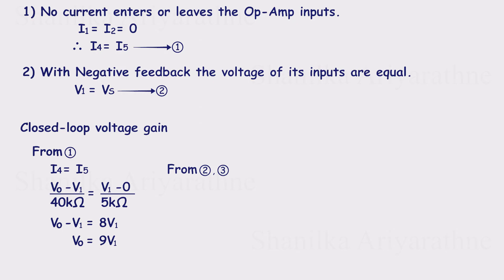And from the second relationship, we know V1 equals VS. Substituting, we get VO equals 9VS. That's our third relationship. So the closed loop gain is VO over VS, which equals 9. That means the input is amplified by a factor of 9. That's the answer to the first part of the problem.